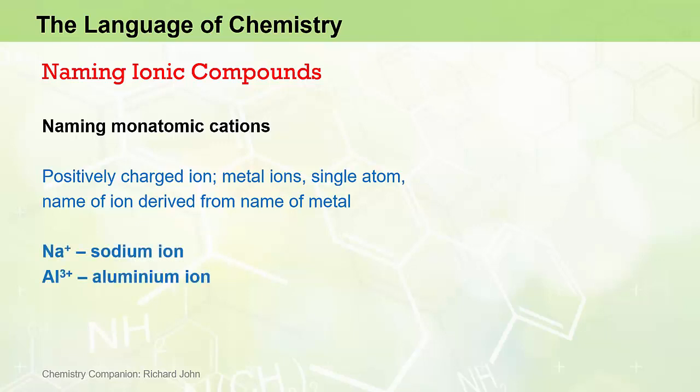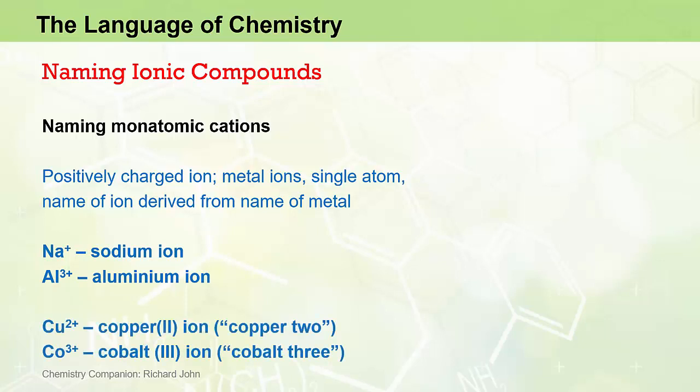For example, we've got two ions here: the Na+ ion. Na+ is derived from sodium metal, and so the name of the ion is simply the sodium ion. And the Al3+ ion, derived from the metal aluminium, is named the aluminium ion. It gets slightly more complex with some other metals. For example, the Cu2+ ion is known as the copper 2 ion, and the Co3+ ion is known as the cobalt 3 ion.